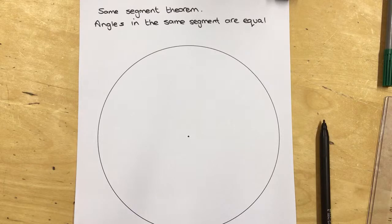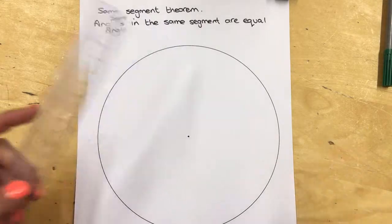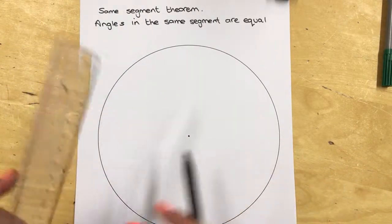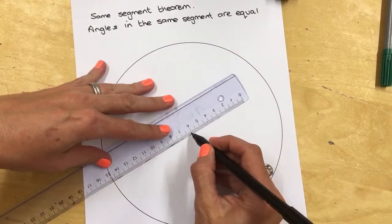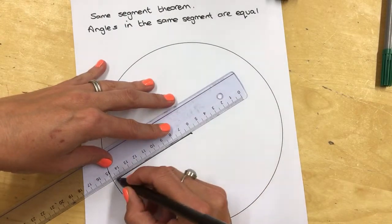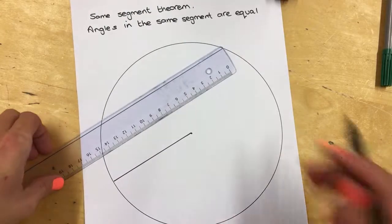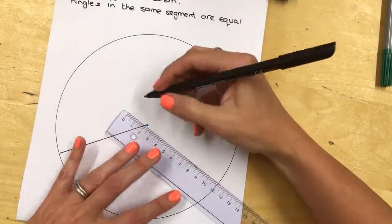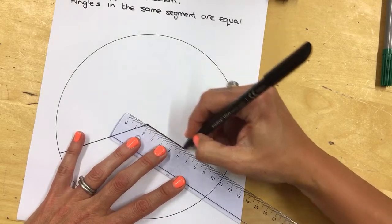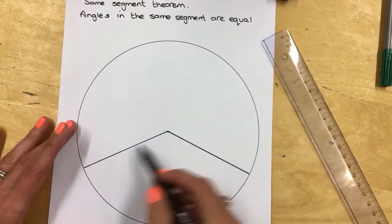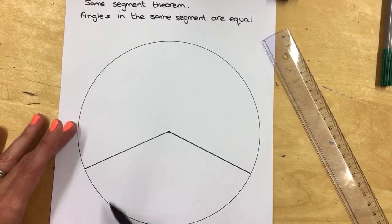We are going to go from the centre to the circumference of the circle and we're going to draw a line out. And then we're going to do the same on the other side. So we're basically forming a sector.